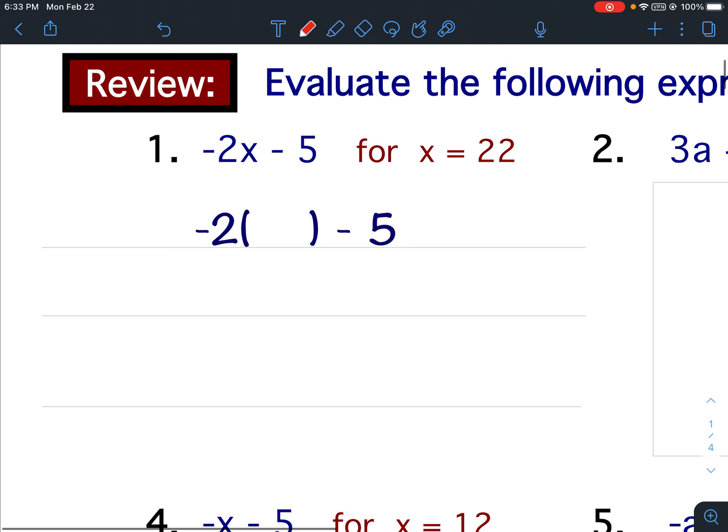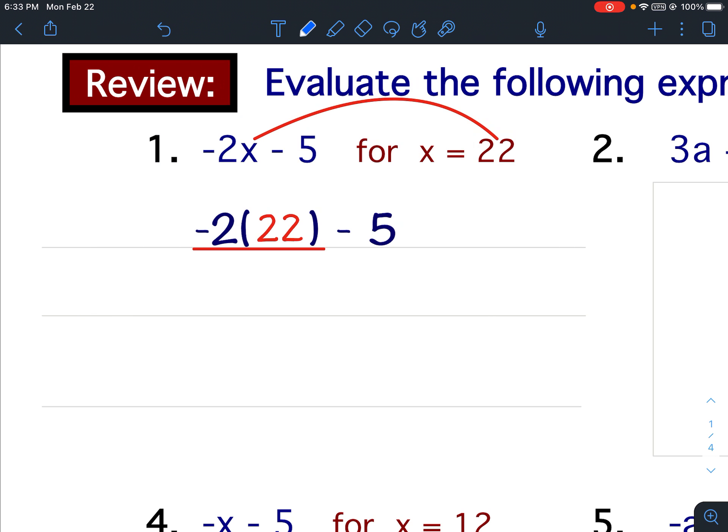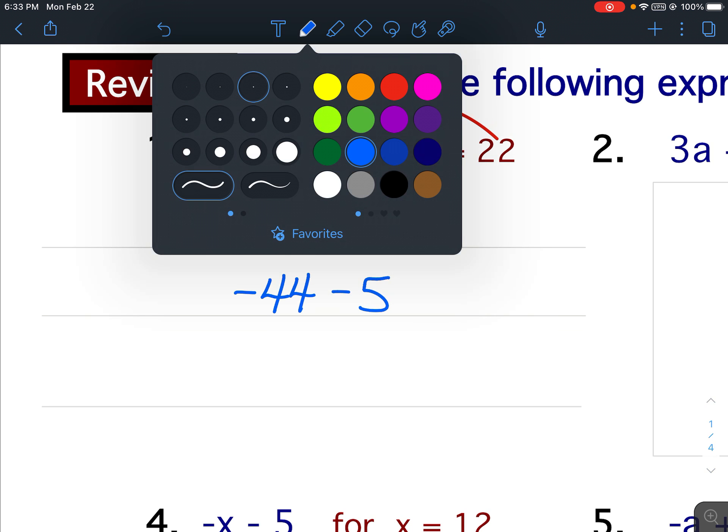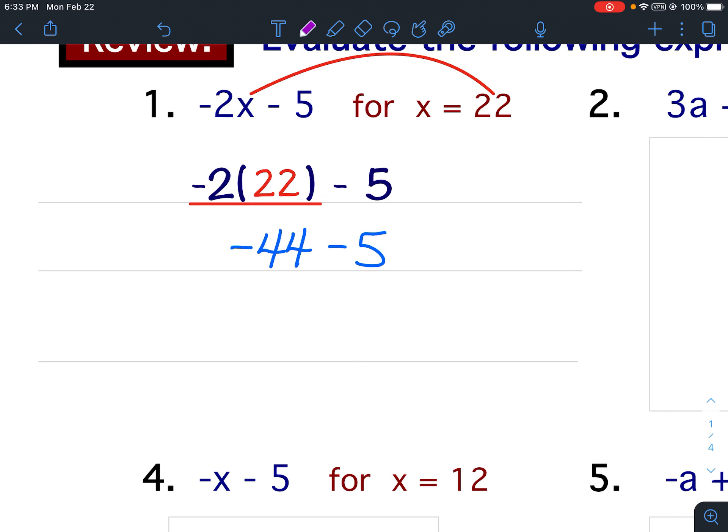So if you look at example 1, it's negative 2x minus 5. So where the x is, I put parentheses. And then I'm going to replace the x with the value that is stated, which is 22. So in the parentheses, I'm going to put 22. And then we're going to follow our order of operations, one step at a time. So we're going to multiply first. Negative 2 times 22 is negative 44. Bring down the minus 5. And then the last step would be to simplify. Negative 44 minus 5. The signs are the same, so I'm going to add and keep the sign. So that would be negative 49.